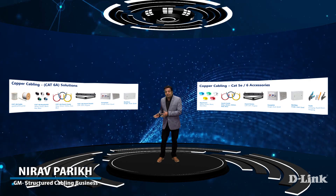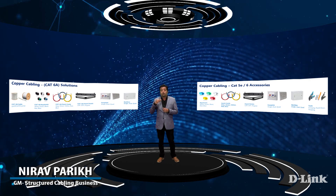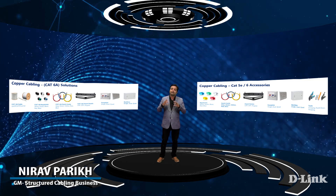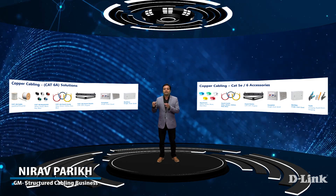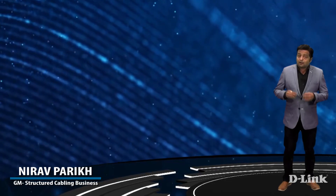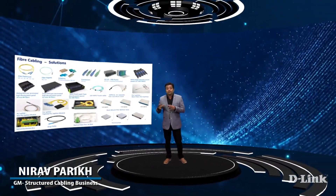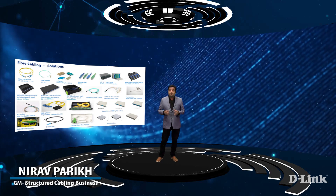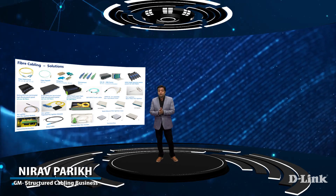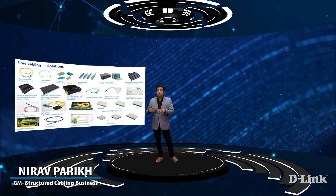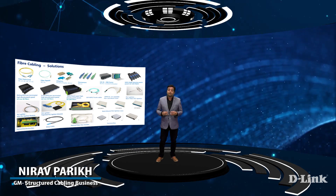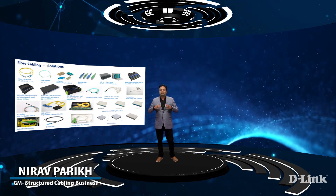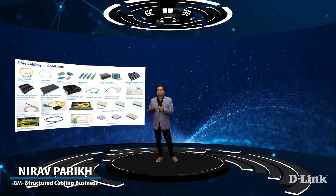We can see D-Link copper solutions including all three categories — Category 6A, Category 6, and Category 5E cable and their components. Coming to fiber solutions, not only regular indoor-outdoor cable and its components are available, but D-Link also has pre-terminated cabling MPO solutions which feature a modular and snapping-fit design specifically for data centers, as well as a complete FTTH passive solution.